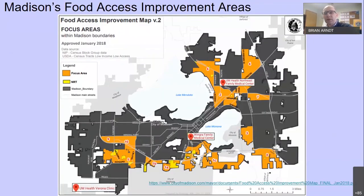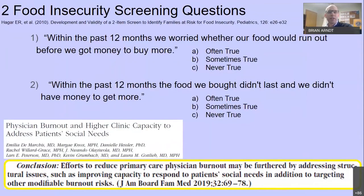We refer to these locally as food access improvement areas. I've inserted three of our four Dane County Family Medicine Residency Clinics — Verona Southwest, Wayne Road near the Isthmus, and the Northeast Family Medicine Clinic. At UW Health Hospitals and Clinics, we use two questions to screen patients for food insecurity. If a patient responds 'often true' or 'sometimes true' to either, they're considered food insecure. This screening can add to provider burnout if we don't have the knowledge and capacity to respond when someone screens positive.